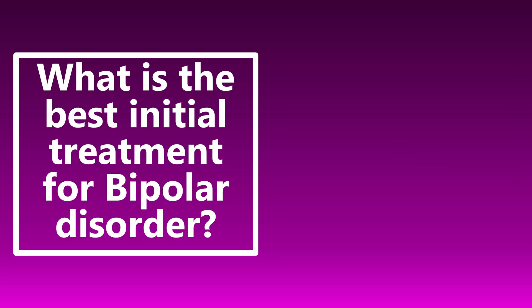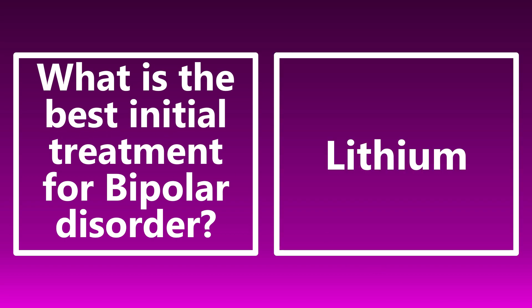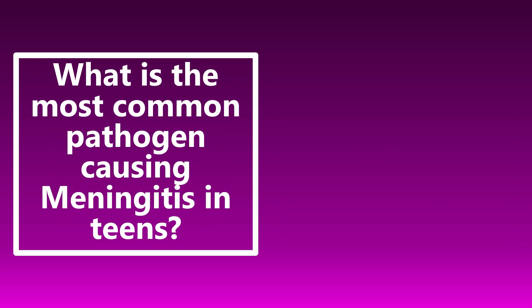The best initial treatment for bipolar disorder is lithium. It has a narrow therapeutic window making toxicity and subclinical dosing concerns, but it is still first line. Other medications like aripiprazole, lamotrigine, and carbamazepine exist, but lithium remains the best initial treatment for bipolar disorder. The most common pathogen causing meningitis in teens is Neisseria meningitidis.